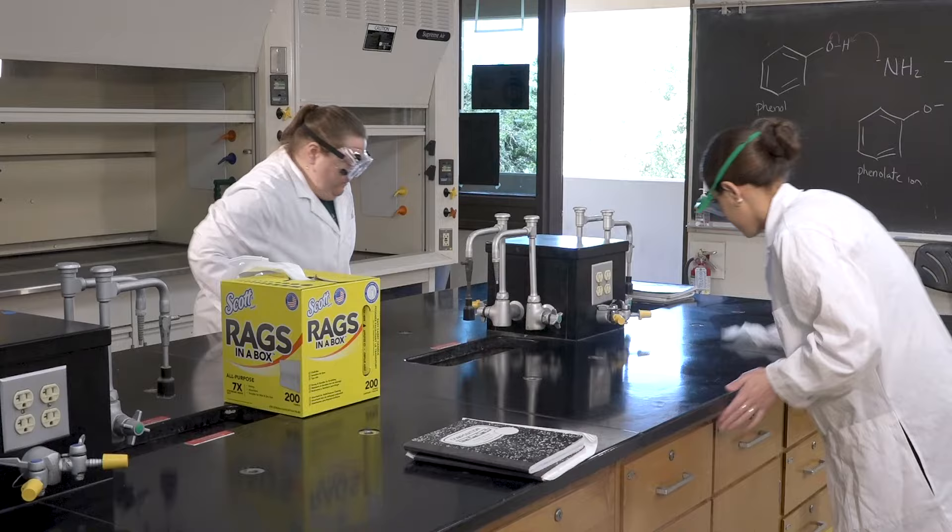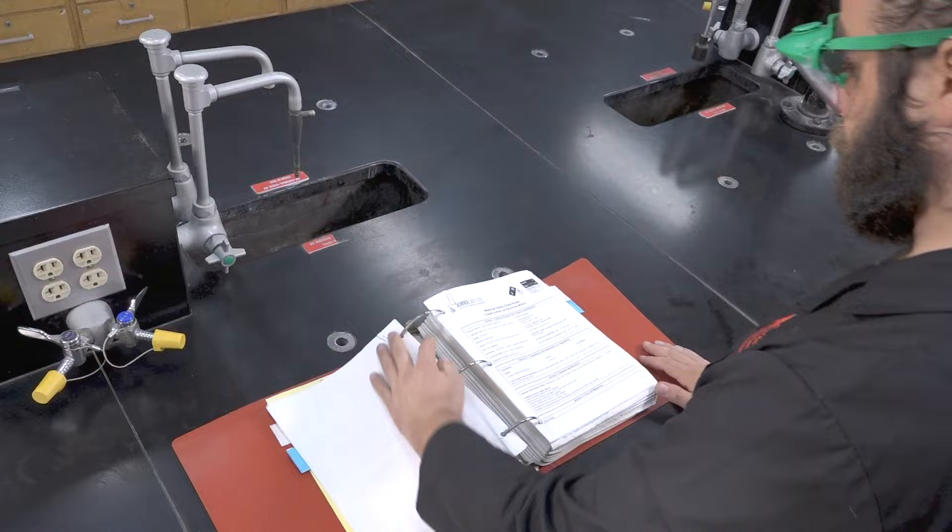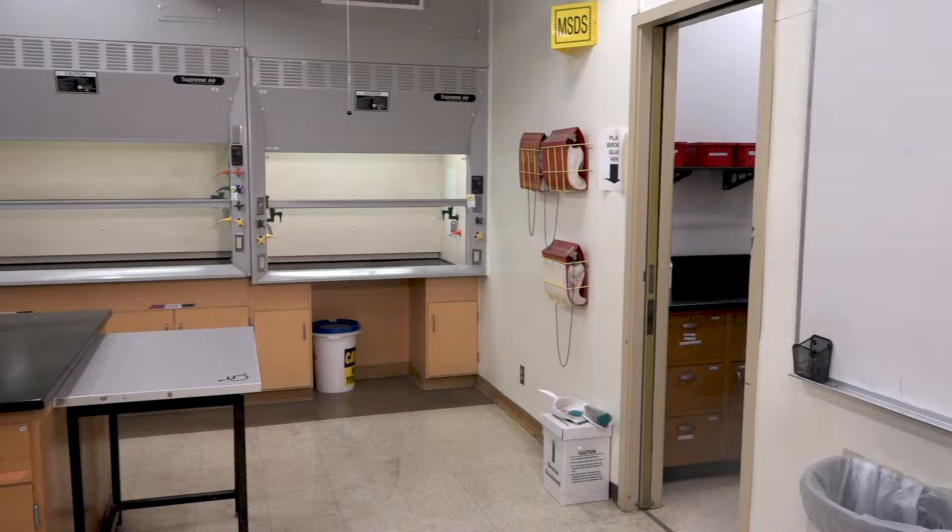Information on the chemicals being used, including the hazards associated with those chemicals, can be found listed in the Materials and Safety Data Sheet, or MSDS. These can be found in a binder located at the back of each classroom.